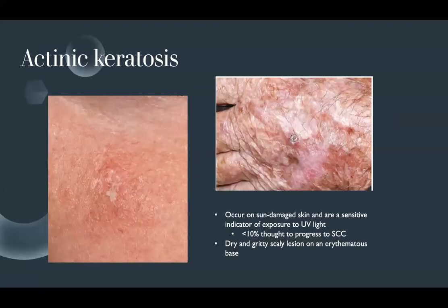Actinic keratosis are scaly thin papules, sometimes as large as plaques. They occur on sun-damaged skin and are a sensitive indicator of UV light exposure. Less than 10% are thought to progress to SCC — some references estimate less than 1%. I like to tell patients that if we skip freezing about 50 to 100 of them, one will eventually turn into a squamous cell carcinoma, so we treat them when we see them.